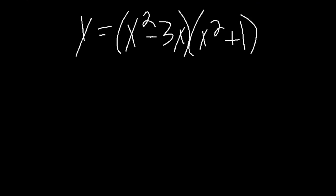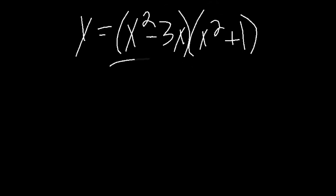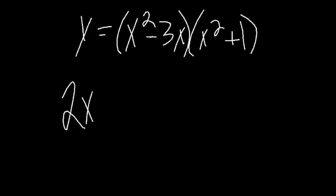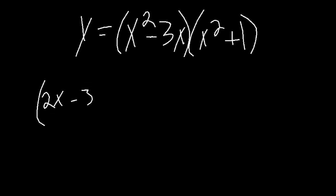Let's try the product rule for a binomial. We do see two functions, so to apply the product rule, we need to find the derivative of the first term and then multiply that by the non-derivative of the second. Using the power rule, we bring down the exponent to get 2x and subtract the exponent by 1, leaving x to the first power — so just 2x. And the derivative of 3x is just 3. That's the derivative of this part, and then we multiply it by the non-derivative of the other part.